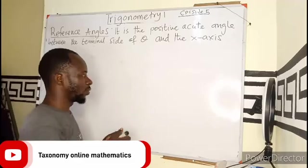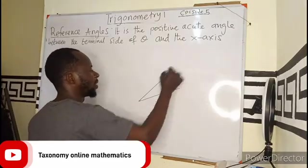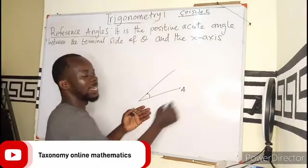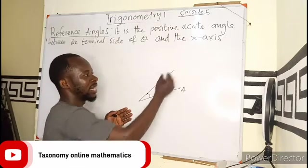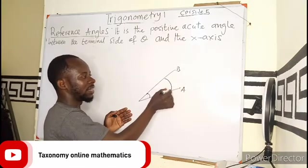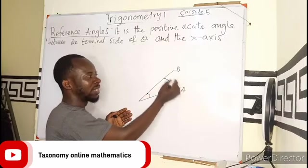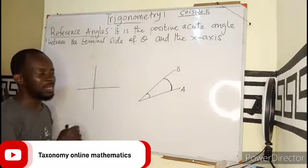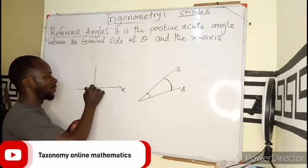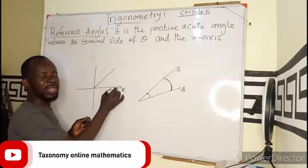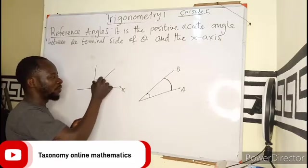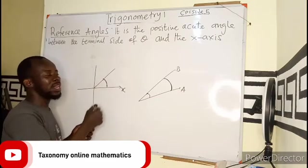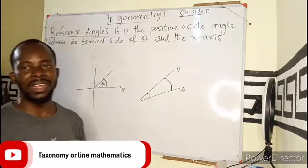Any other line — for example, if I have an angle like this, measuring from A up to B, that means A is my initial line and B is the terminal point. The same way, if I have my x-axis, any angle formed here has an initial point and a terminal point. So the positive angle formed between any terminal point and the x-axis is what we refer to as a reference angle.